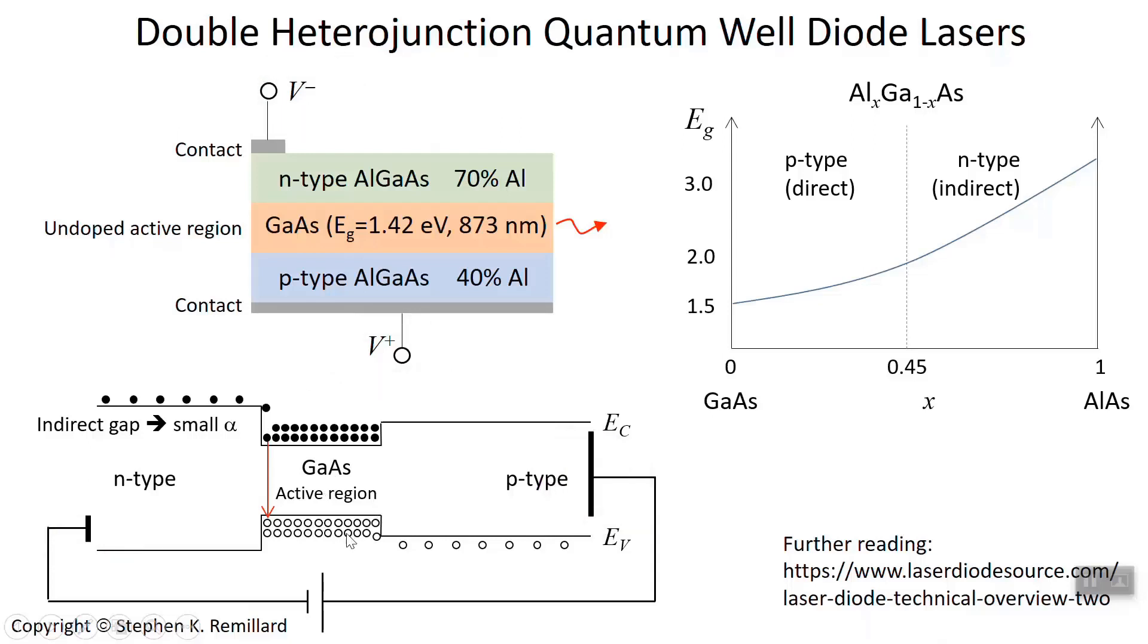When it's forward biased, electrons are suctioned toward the positive electrode, pushed away from the negative electrode. Holes tend to be pushed away from the positive electrode. What happens then is that in this gallium arsenide region, which has a smaller band gap than aluminum gallium arsenide, the electrons and holes get trapped because they get into this region and the conduction band edge comes down and the valence band edge comes up.